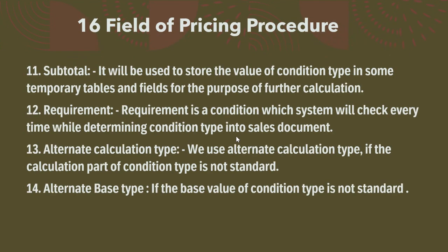The eleventh field is Subtotal. It is used to store the value of a condition type into temporary tables and fields for the purpose of further calculation. For example, for free goods processing, the subtotal value used is 5.